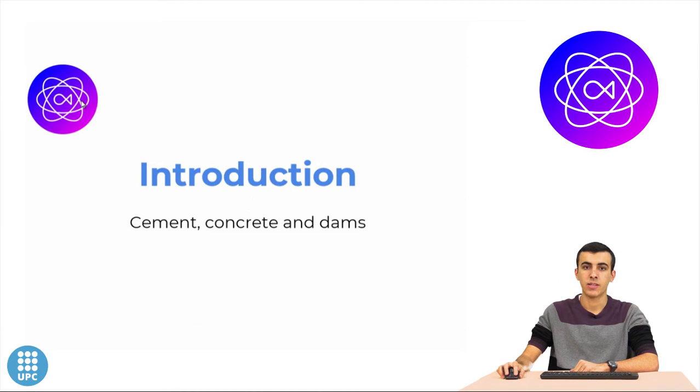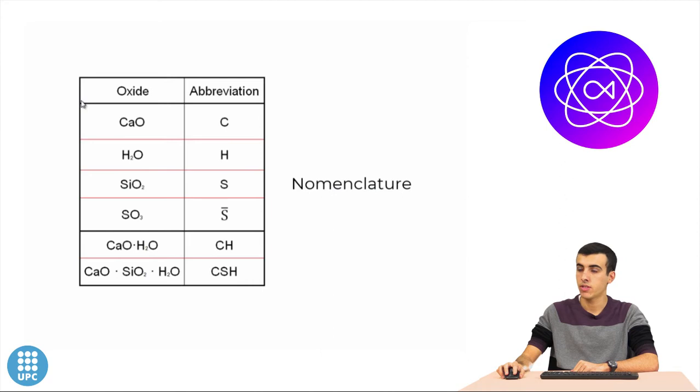Cement is a type of binder widely used in construction to produce concrete, the main construction material. Cement chemistry is a very complex subject and in order to be simplified we use the following nomenclature. C stands for calcium oxide, H for water, S for silica, A for alumina, S with a bar on top for sulfur oxide, etc.